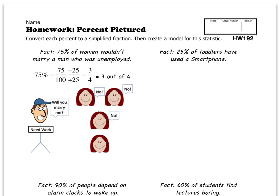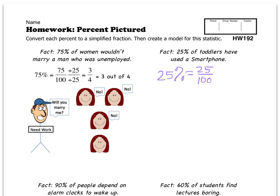We're going to write out the percent, set it equal to the number over 100, then find the greatest common factor we can divide top and bottom by to simplify the fraction, and then write it out as an English sentence. So here we have 25% is equal to 25 over 100, because percent compares all numbers to 100. We can divide top and bottom by the biggest number that divides evenly into both 25 and 100, which ends up being 25.